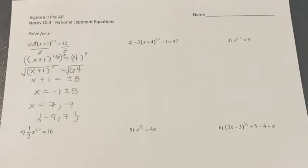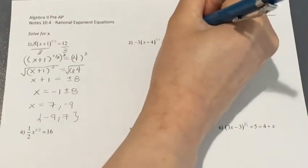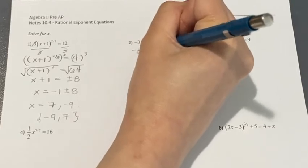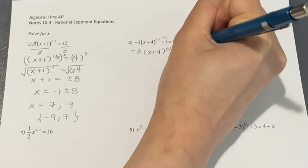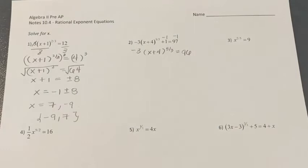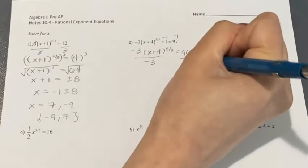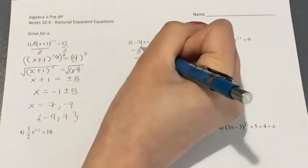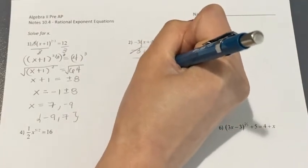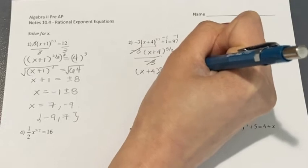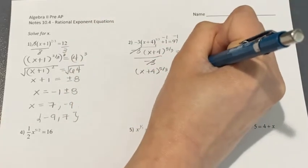Now let's move on to problem two, which needs a few more operations. You have negative three times the quantity x plus four to the power of five over three, plus one, equals 97. First subtract one from both sides, then divide both sides by negative three, leaving x plus four to the power of five over three equal to negative 32.